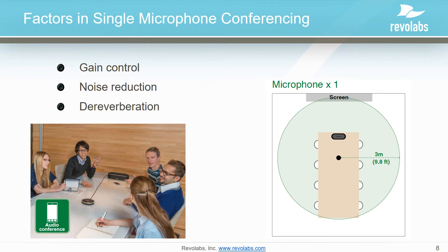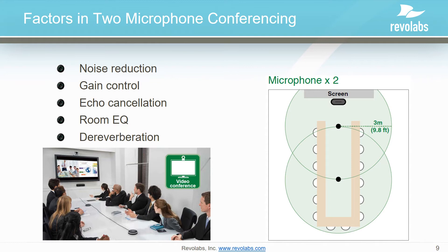Now let's make the meeting a little bit larger and add a second microphone. First, you increase the number of people and the area you can cover. But now questions come into play: where is the speaker talking? Which is the microphone closest to them? Which microphone should the audio device focus on as input? Echo cancellation also becomes very important here — you have a speaker at the front of the room playing sound from the far end, and you don't want the microphones to pick that up and send it back. Whatever the microphone picks up from the speaker must be removed from the signal going back to the far end.